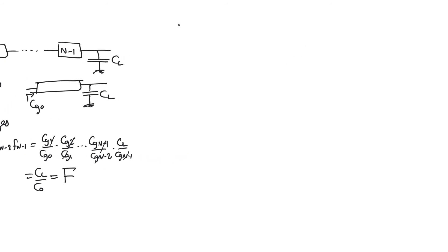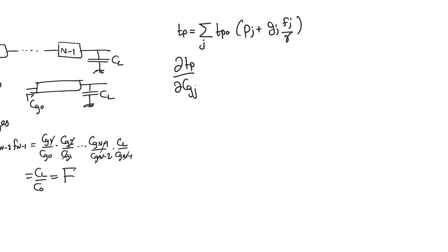The total delay tp is the summation over j of tp0 times (pj plus gj times fj over gamma). The objective is to minimize tp by finding the optimal sizing. Since we don't have size directly in the expression, we differentiate with respect to CGj, because gate capacitance and size are exactly the same thing. CGj appears in only two delay expressions: in stage j it appears in the denominator, and in stage j minus 1 it appears in the numerator.